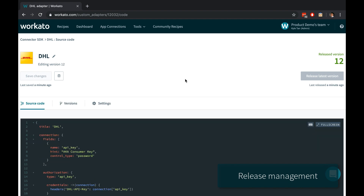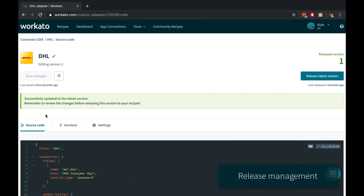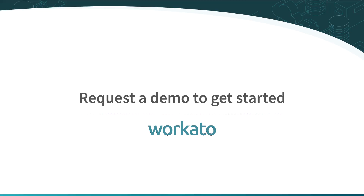And when you publish a stable release, Workado notifies other teams that might be affected downstream so that you don't have to. Workado's connector SDK is a fast, robust, and secure way to extend Workado's built-in functionality. To learn more, just request a demo to get started.